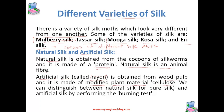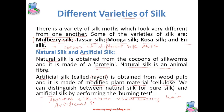We can distinguish between natural silk and artificial silk by performing the burning test. When you burn natural silk, it smells like burning hair. When you burn artificial silk, it smells like burning paper.